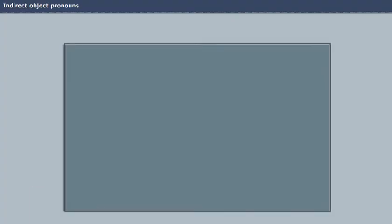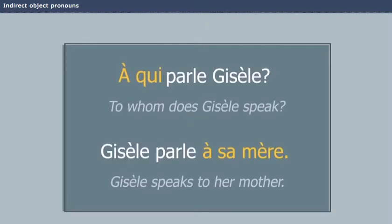To know if you need an indirect object pronoun, look for the preposition à. In this example, à qui parle Gisèle? The indirect object is the answer to the question. In other words, Gisèle's mother.